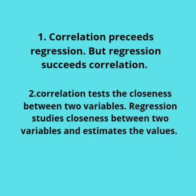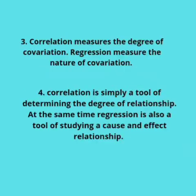That is the first difference. The second one is the correlation between two variables. Regression studies the closeness between two variables and estimates values — that is the first difference between correlation and regression. The next difference: correlation measures the degree of covariation, while regression measures the nature of covariation.